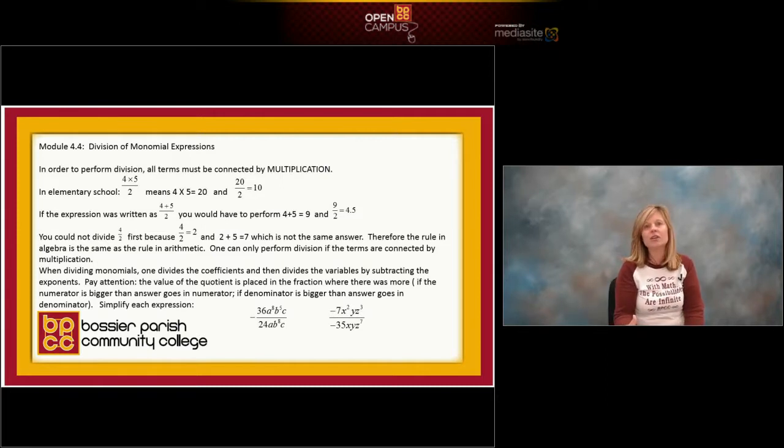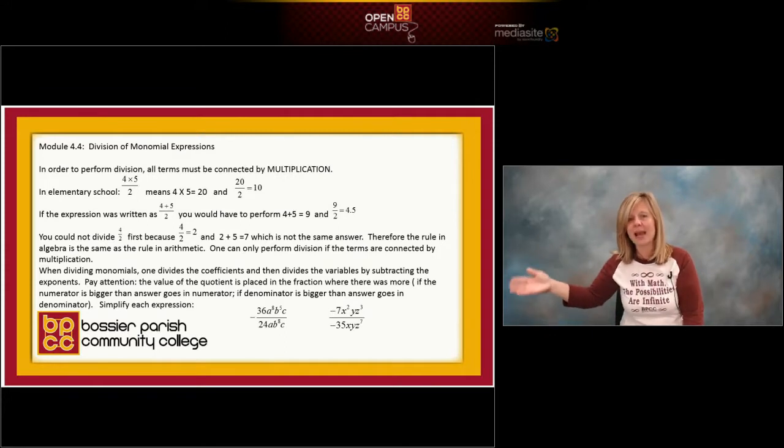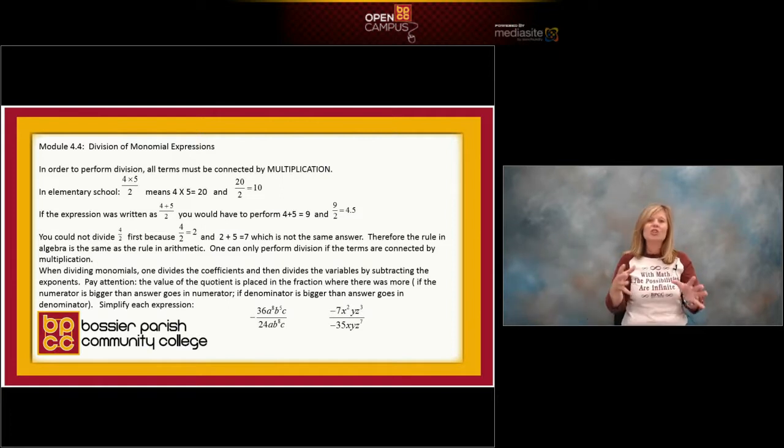I could also look at that expression and in my head, do the division part first. I could take the 4 in the numerator and divide it by the 2 in the denominator. And what's 4 divided by 2? It's 2. And then 2 times 5 would still give me the same answer, same quotient, 10. So that shows you as long as you're connected by multiplication, you can do division.